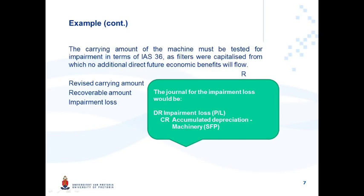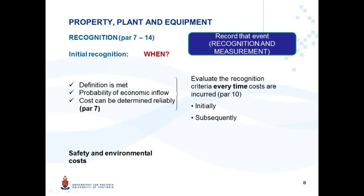To understand the effect of the impairment loss, the following journal is processed: debit impairment loss through profit or loss — it's an expense — and credit accumulated depreciation. The credit to accumulated depreciation causes the asset's carrying amount to decrease. So although you capitalized $6,000 to the asset, increasing the carrying amount, you then had a resultant decrease of $1,000, and after all of this you have not overstated the asset. In summary, we evaluated the safety and environmental costs against the recognition criteria and concluded they may be capitalized as part of initial costs incurred. But very importantly, we had to test for impairment to prevent overstatement of the property, plant and equipment item.